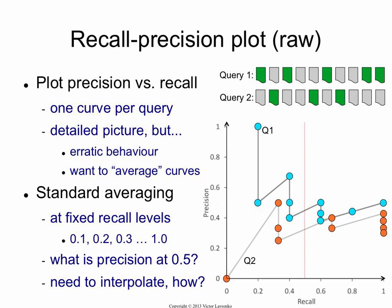So how are you going to average this curve and that curve? That actually turns out to be non-trivial. For example, say you wanted to measure precision at 15% recall — there is no point there for query one or query two. There is no point with a 15% recall, so you can't simply assign a precision value. You have to interpolate between the points in some way — infer a value for, say, 50% recall based on other precision values for query one and query two.